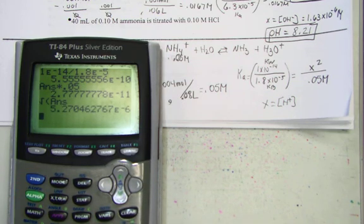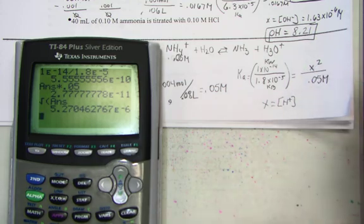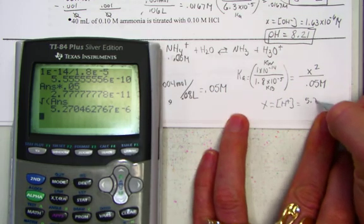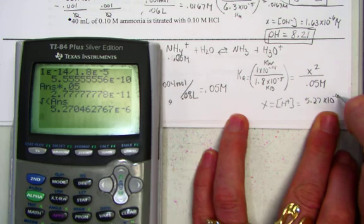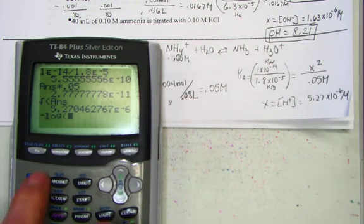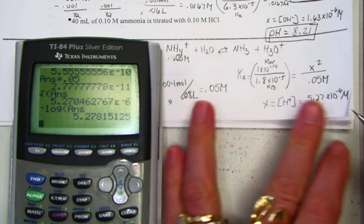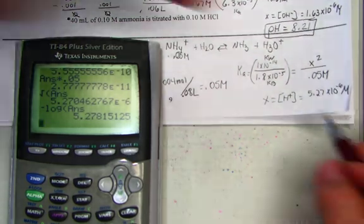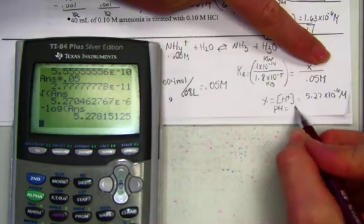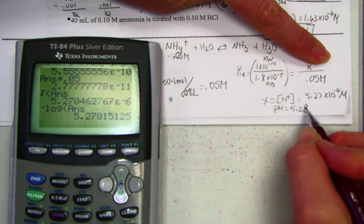Square root my answer, and hydrogen ion is looking as 5.27 times 10 to the negative sixth molar units. Negative log the hydrogen directly, and we get a pH of 5.28 pH units.